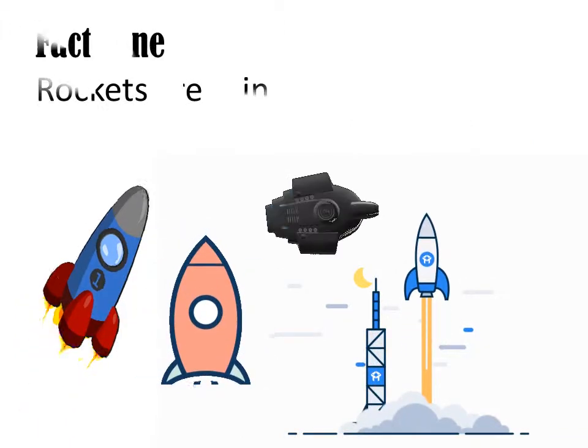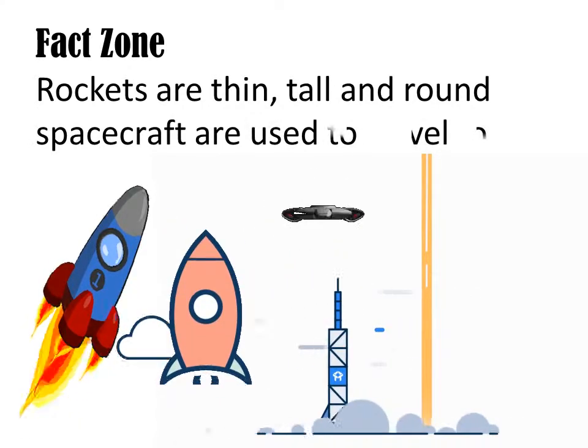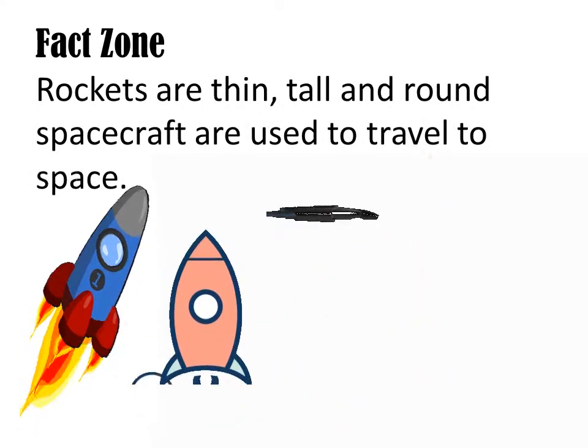Fact zone: rockets are thin, tall, and round spacecraft used to travel to space.